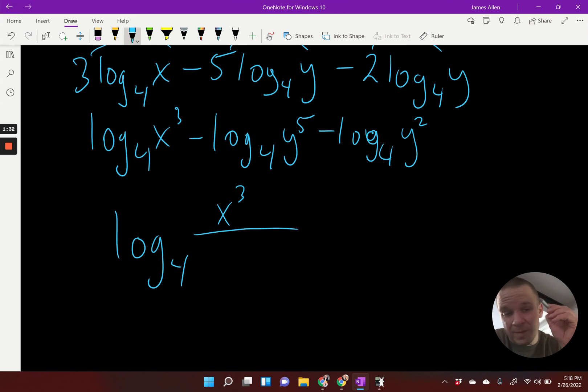Now anything with a negative out in front, that's going to go to my denominator there. So that's y to the fifth. And I'm going to have that y to the second is going to end up in the denominator as well.